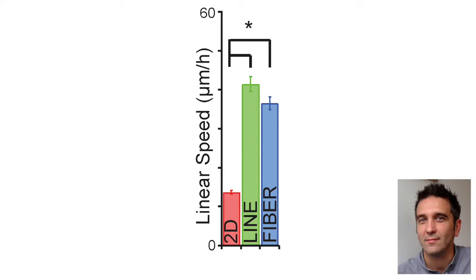On fiber the speed was much faster and the persistence was increased tremendously. The speed was relatively similar to what you get on a 1D printed line and was about two to three times faster than what you get in two dimensions.